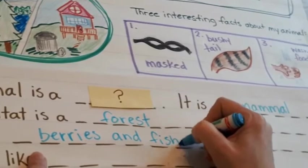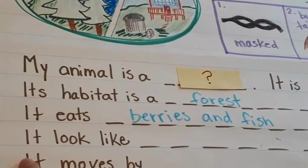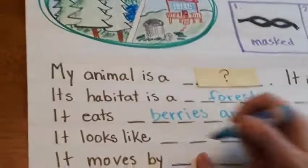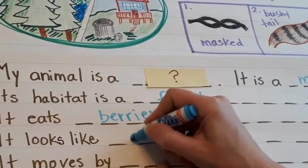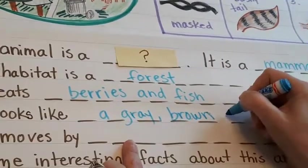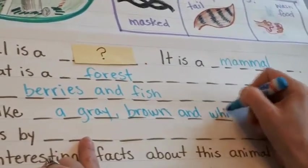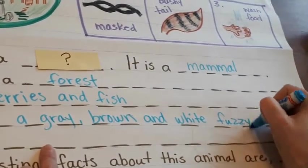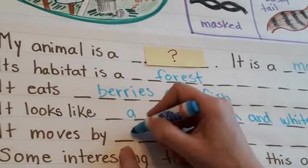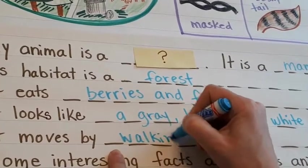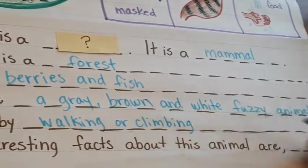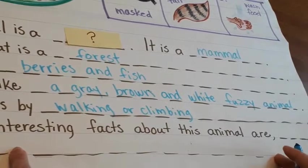It eats berries and fish — you can put whatever it is that your animal eats. It looks like — here you get to describe what your animal looks like. My animal looks like a gray, brown, and white fuzzy animal. It moves by walking or climbing, so think about how your animal gets around.